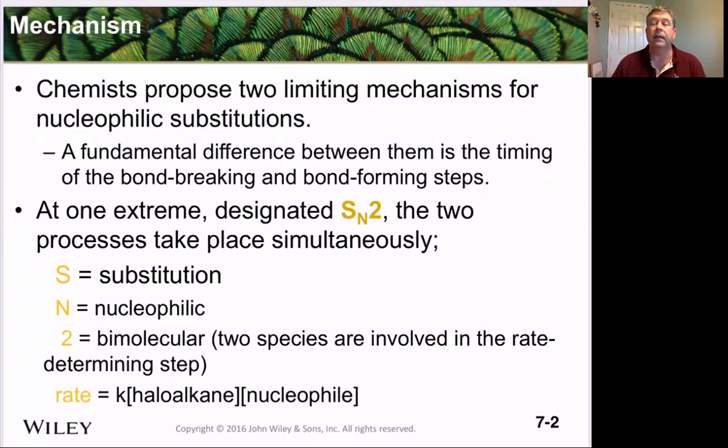Because we have to have two molecules in that transition state, the rate is controlled by the concentration of not only the substrate, the halo alkane, but also the concentration of the nucleophile itself. So the rate equals k times the concentration of the halo alkane times the concentration of the nucleophile.